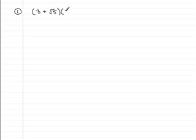multiplied by 3 minus root 5. So if you multiply this out, it will equal 3 times 3 which is 9, and 3 times negative root 5 which is minus 3 root 5. Then we start with plus root 5